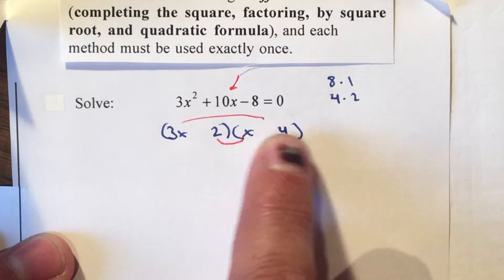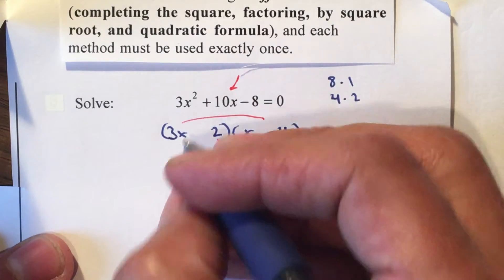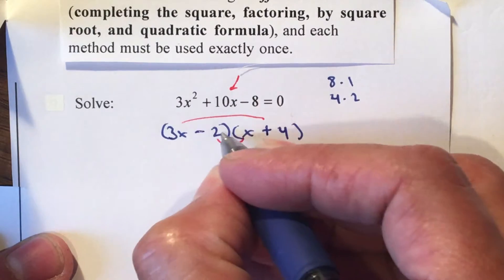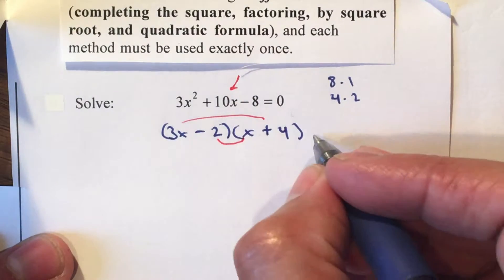They need to have different signs. So therefore I'm gonna make this a positive, so it gives me positive 12 minus 2 is 10, equal to 0.